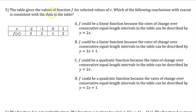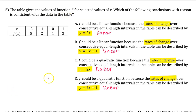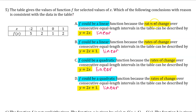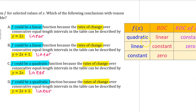Number 5. The table gives the values of f for selected values of x. Which of the following conclusions with reason is consistent with the data in the table? All of the answer equations at the end are linear — think y equals mx plus b. All options say that f has a rate of change described by a linear function. When the rate of change is linear, that means f of x is quadratic. So we can eliminate options A and B.